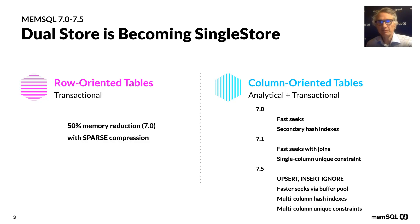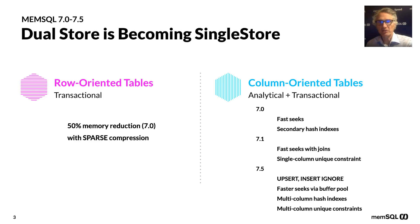Moving on to 7.1, we knew people didn't want just simple queries with a selective filter against one table — they wanted that to work with join queries as well. Suppose you have a multi-way join with a very selective filter on one table; you'd want to seek into indexes on the join column of the other tables. We introduced that in 7.1. We also introduced support for single-column unique constraints with a single-column unique hash index, helping people do deduplication on tables bigger than RAM.